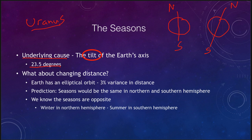We know it's the tilt. But what about the changing distance? One of the misconceptions that people have is that the seasons are caused by the changing distance between the earth and the sun. The earth does have an elliptical orbit, meaning it is sometimes closer to the sun and sometimes further away. It turns out this is about a three percent variation — much less than what we would need to explain the seasons. So while we are closer and further away from the sun, it is not the reason that causes the seasons to occur.